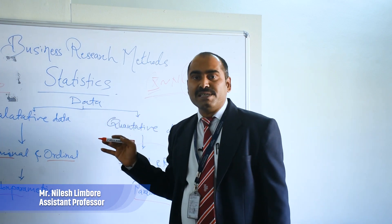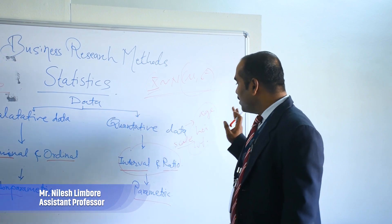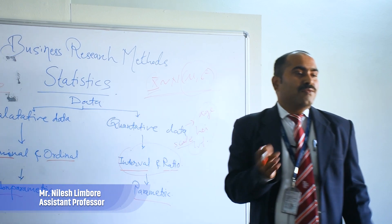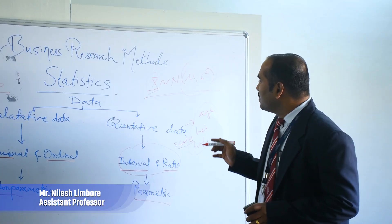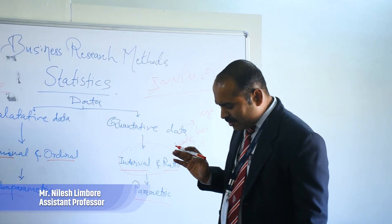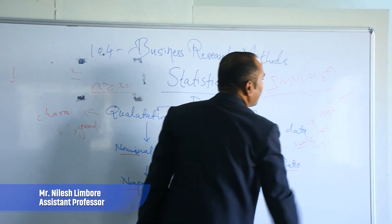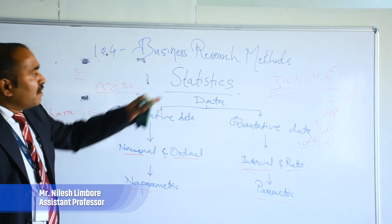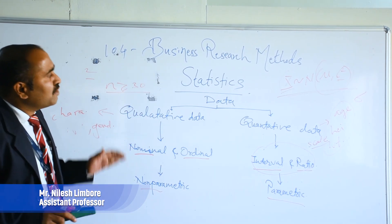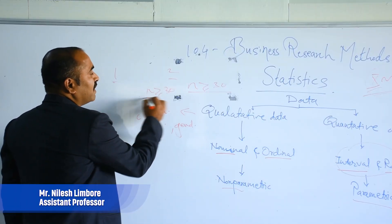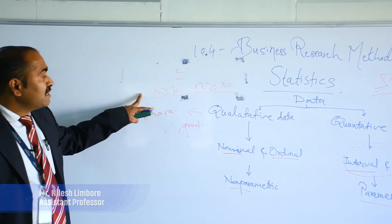Otherwise we can choose the small sample test such as the t-test. There are four types: one sample mean test, two sample mean test, one sample proportion test, and two sample proportion test. Similarly in the z-test — however, we cannot apply the z-test in real life because it requires the population standard deviation sigma to be known in advance, which is not possible in real life. So even if our sample is greater than or equal to 30, we can use the small sample t-test.